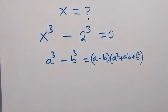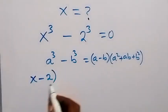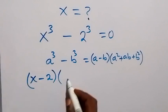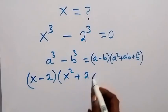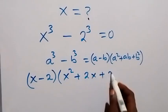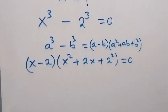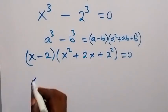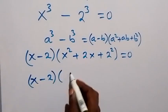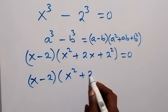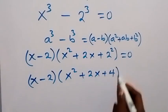So now we can write this in this format and this will become x minus 2, then into bracket x square plus 2x plus 2 square which equals 0. Then this is the same thing as x minus 2 multiply by x square plus 2x plus 4 equals 0.